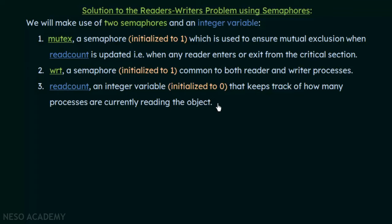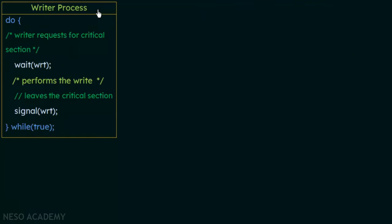If there is only one reader, read_count equals one; if two readers, read_count equals two; if no readers, read_count equals zero. Mutex and WRT are initialized to one, and read_count is initialized to zero. Now let's see how we design the code for the writer and reader processes, starting with the writer process.